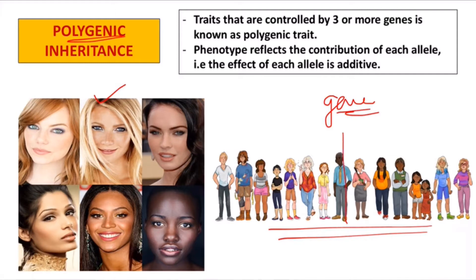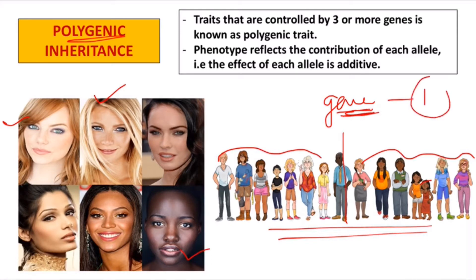If someone's height is very tall or very small, all the different heights will show variation. In skin color, someone is very dark and someone is very fair, with many variations in between. These characters — height, skin color, and eye color — are controlled not by one single gene, but by many genes. This is why we call it a polygenic trait, because three or more genes are going to control it.